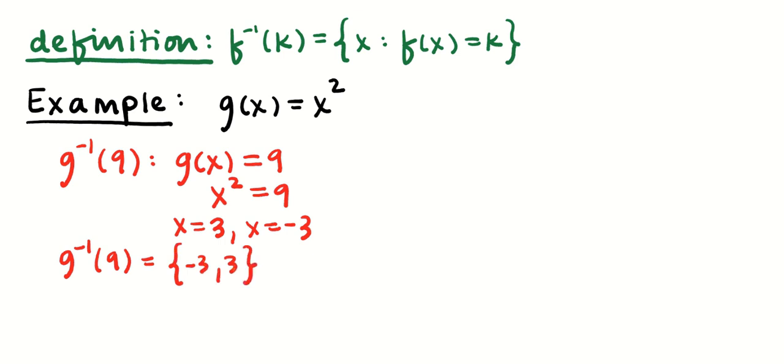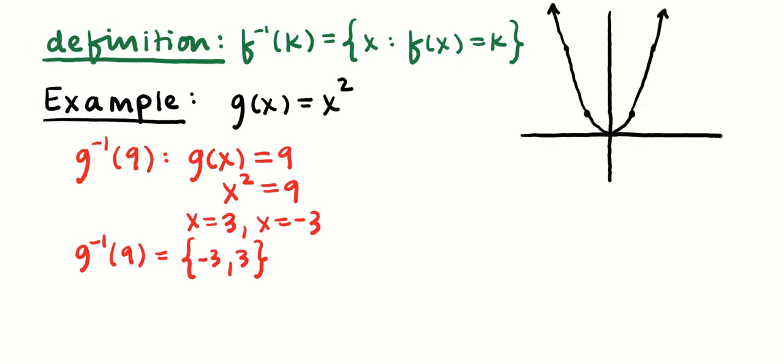Now, geometrically, what just happened there? Pardon me, that was a pretty rough-looking x-axis. That's much better. When I was looking for g inverse of 9, what I was really doing was I was going over here to 9, going kind of out to one side, and I found the graph. And I backtracked to where on the x-axis did that happen.